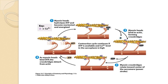The contraction cycle continues if ATP is available and calcium-activated factor level in the sarcoplasm is high. Calcium-activated factor is a proteolytic enzyme which is activated by calcium. It contributes to the tenderizing of meat.